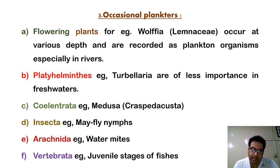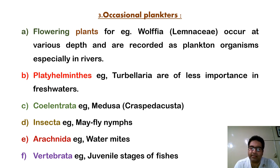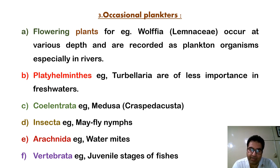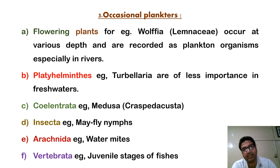We do have some occasional planktons — that is, they spend their part of the life as the plankton, but they do not act as the plankton all through life. Such as certain flowering plants like Wolfia that occur at various depths and are recorded as plankton organisms, especially in rivers. We have Tubularia as an example of coelentrates, medusa as a coelentrate, mayfly and nymphs as the example of Insecta, water mites as the example of Arachnida, and the juvenile or larval stages of fishes as the example of Vertebrata — since larval stages do not have the ability to move against strong currents.